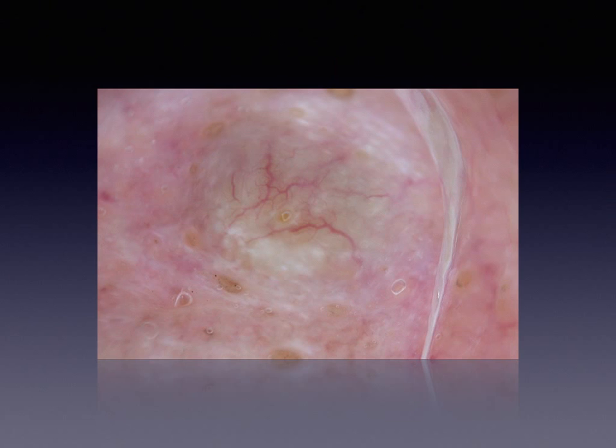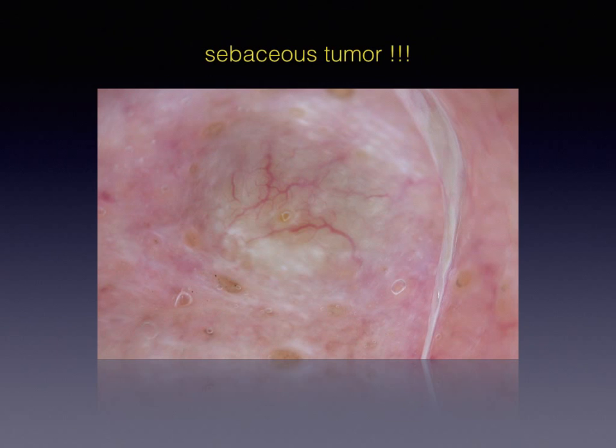In contrast to the pigmented structures, linear or arborizing vessels of BCC are not specific for the diagnosis, since they can be seen also in other tumors, especially of adnexal origin, such as this sebaceous tumor.